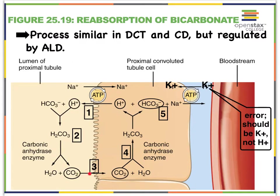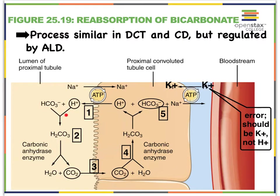Once the carbon dioxide diffuses into our tubular cell, it meets up with water. We once again have our carbonic anhydrase enzyme, and we're recreating our bicarbonate ions. Once we have our bicarbonate ions, they can then — with the help of a sodium-potassium pump (note that the book has a typo here; this should say potassium, not hydrogen) — as sodium is pumped out, bicarbonate ions are going to follow that electrochemical gradient and ultimately end up in the blood, fixing the pH. Our hydrogen ions that have been formed are then the ones that can be secreted, pumped back out to help form carbon dioxide in the filtrate.